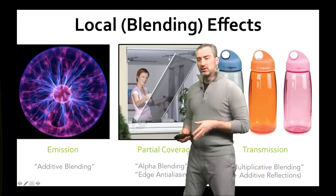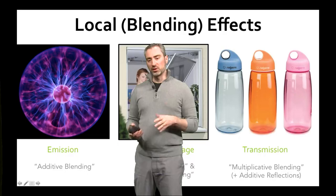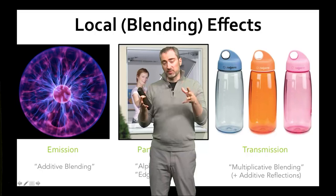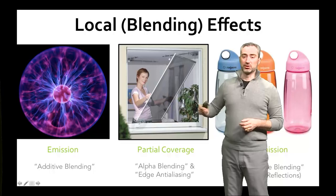Here are the kinds of effects we see from transparency. There are three local blending effects, which are cases where different surfaces at the same pixel overlap and need to be blended together to create the final image. One is emission, also referred to as additive blending, where there's a transparent medium that itself is emitting light and glowing.